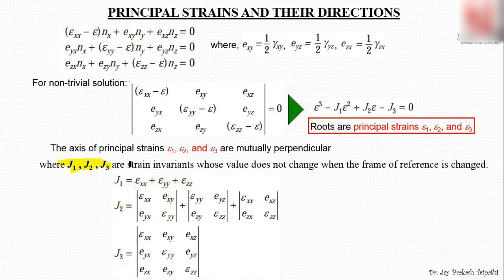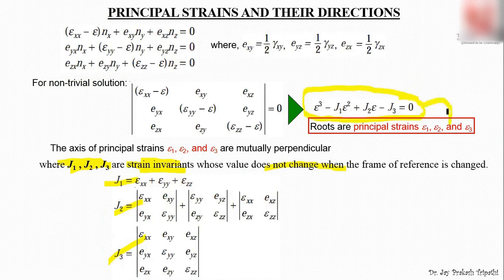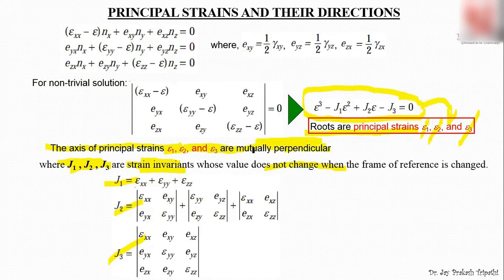J₁ is the summation of ε_x, ε_y, and ε_z; J₂ is the summation of three 2×2 sub-determinants; and J₃ is the determinant of the full 3×3 strain matrix. These J₁, J₂, J₃ are called strain invariants — their values do not depend on the frame of reference. Taking the roots of this cubic equation gives three principal strains ε₁, ε₂, and ε₃, and their axes are mutually perpendicular.